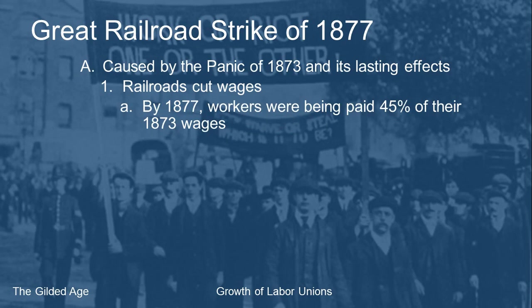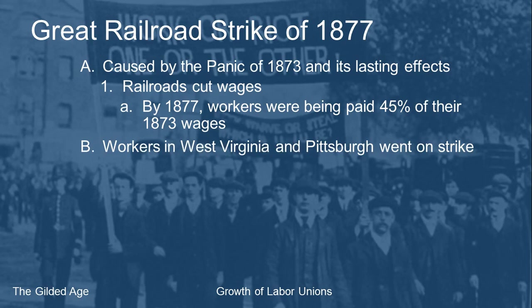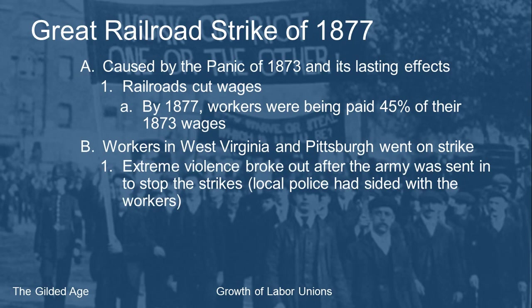By 1877, four years after the Panic started, workers were being paid only 45 percent of what they had been earning in 1873 — imagine your salary cut nearly in half. Railroad workers started with the Baltimore and Ohio Railroad, then workers from several different railroad companies went on strike. It started in West Virginia, moved into Pittsburgh, and spread around the country. The army ended up being sent in to stop the strikes — local police in West Virginia had sided with the workers and done nothing.